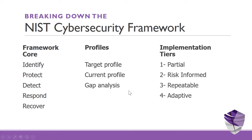Once you've gone through that gap analysis, the framework defines four different tiers to indicate where you are in the cybersecurity ecosystem. Tier One is called Partially Implemented — you have no formal processes in place; essentially you're waiting for something to happen, and when it happens, you'll deal with it.